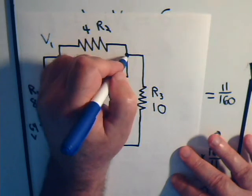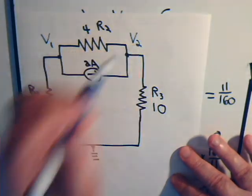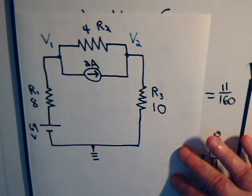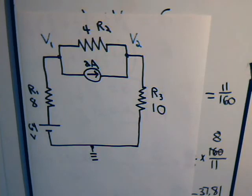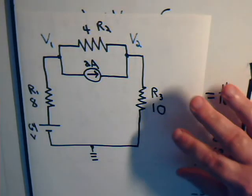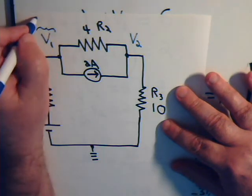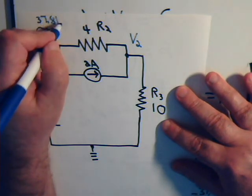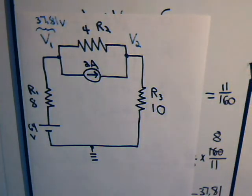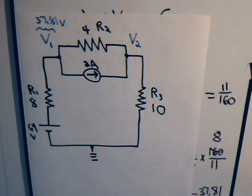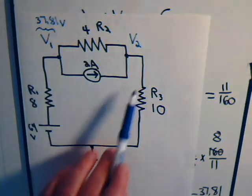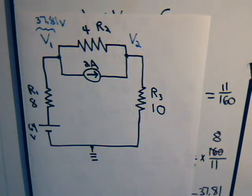That's down here and that's grounded. This node we said is at a potential V1 and the second node is at a potential V2. At the very end of the video we determined that V1 is 37.81 volts. Now we want to determine what V2 is, then once we have that knowledge we can determine the current through each one of these resistors in the circuit. Let's quickly find out what V2 is equal to.